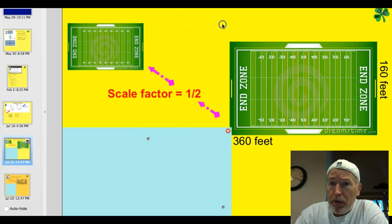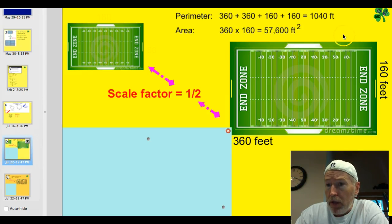So what would we do here? Well, the first thing we need to do is determine the perimeter and the area of the original one. So we have 160 feet by 360 feet. So if we add up all those numbers, 360, 360, 160, and 160 for our perimeter, we get 1,040 feet.